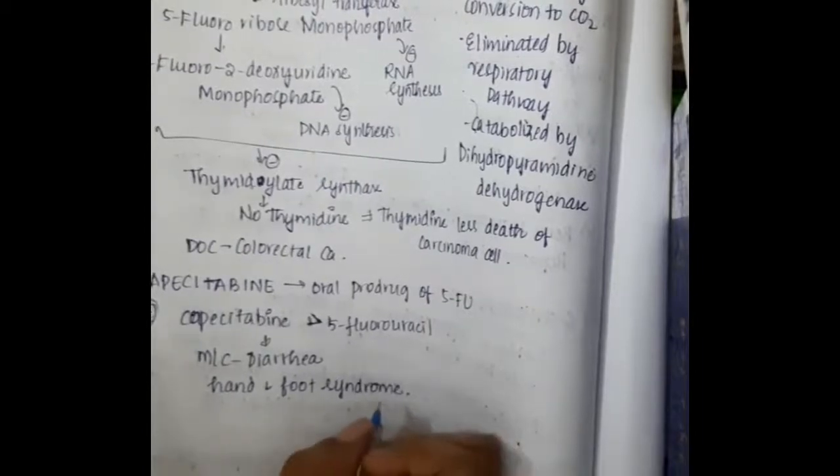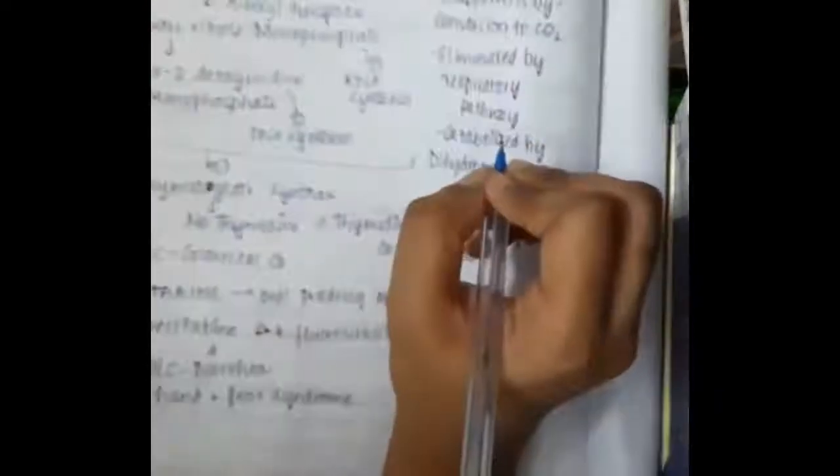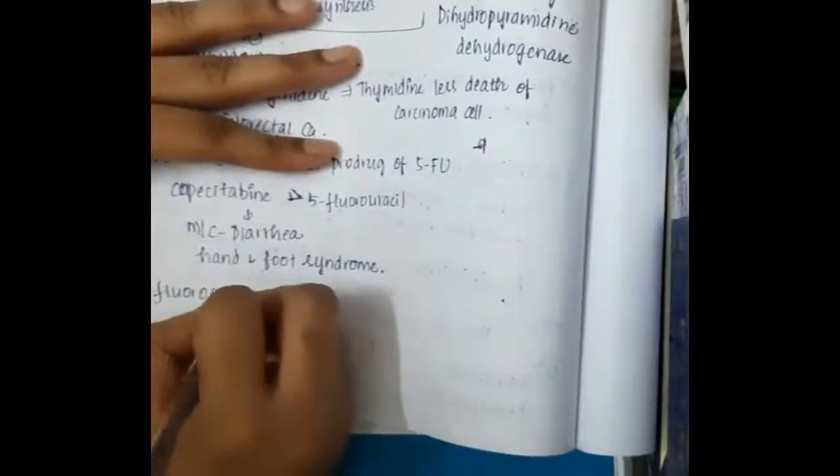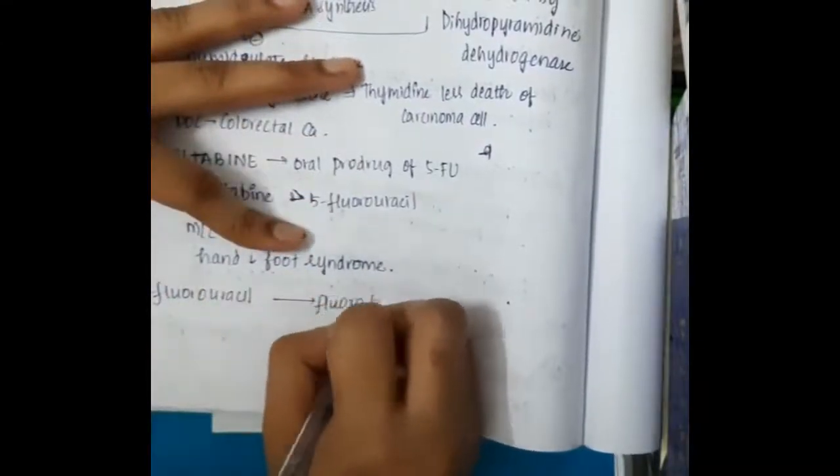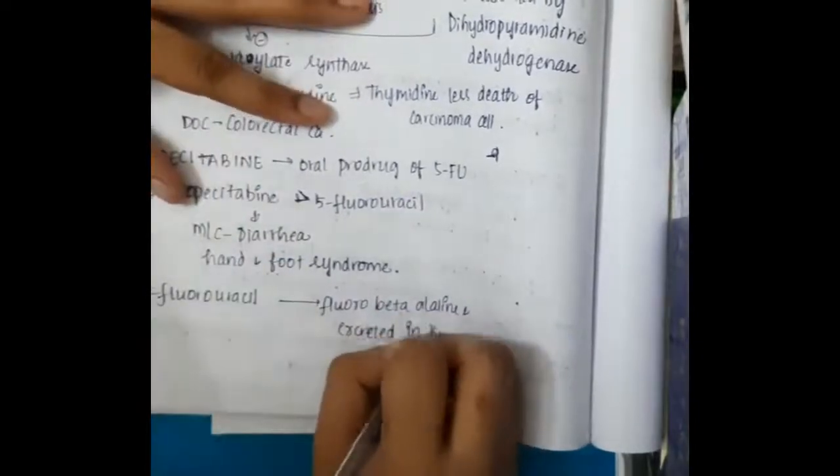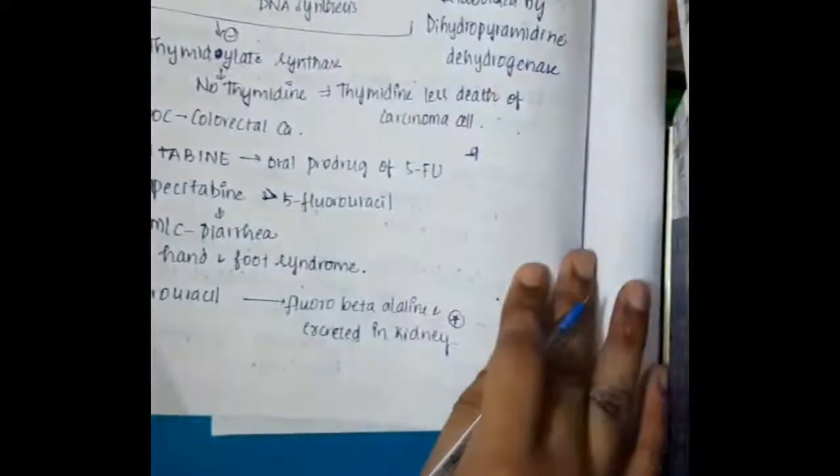The drug 5-fluorouracil gets converted to fluoro-beta-alanine, which is excreted in the kidney.